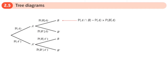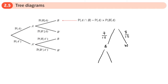You'll remember at GCSE you did questions where maybe a bead was taken out of a bag and it wasn't replaced. So let's say we had some black beads and some white beads — say 7 out of 15 were black and 8 out of 15 were white. This is without replacement.